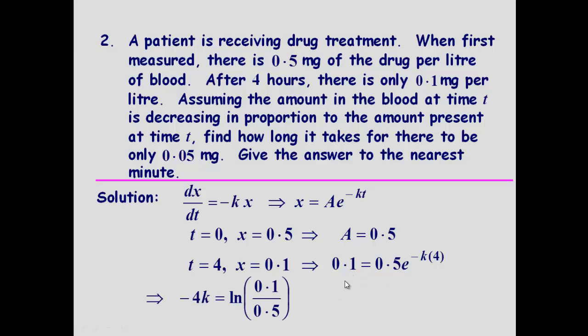Again, get the 0.5 over there, isolate the e term. We can then natural log both sides, solve for k. And we now have a k value.